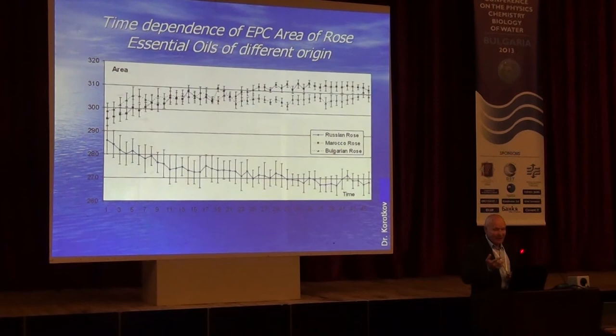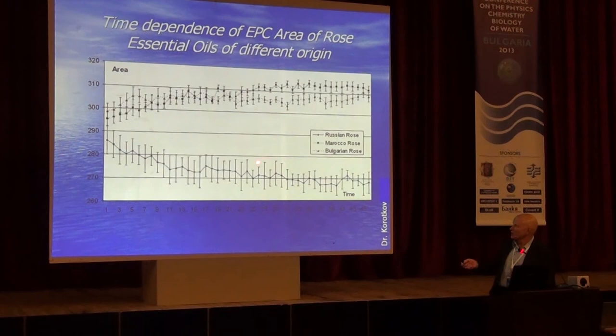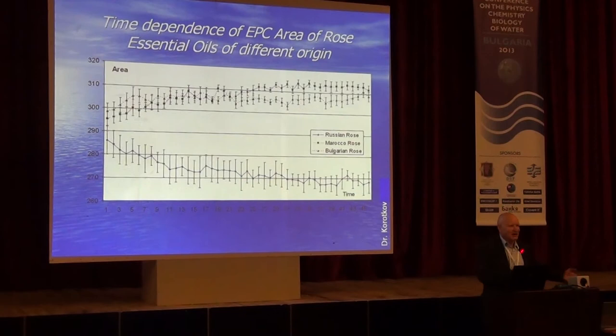We can also see differences in initial substances. For example, the result of rose oil from Morocco, Bulgaria, and Russia: the Russian rose oil has absolutely different dynamics of signal compared with Morocco and Bulgaria. I don't know whether it is because Russia is very cold, but this was measured before any Japanese influence, so it cannot be attributed to that.